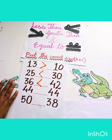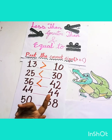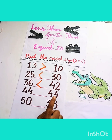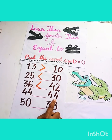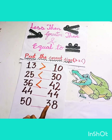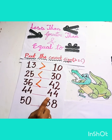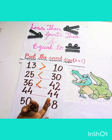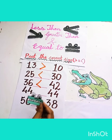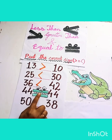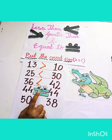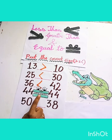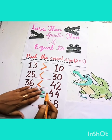Now, tell me children, which number will Ellie eat? This number 44 or this number 44? Remember children, if the numbers are the same, Ellie gets confused. So if the numbers are the same, we use the equal sign.